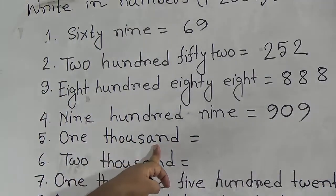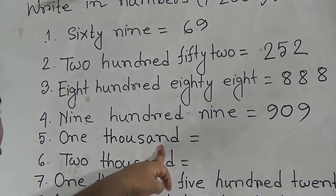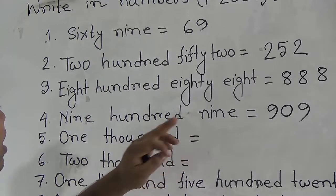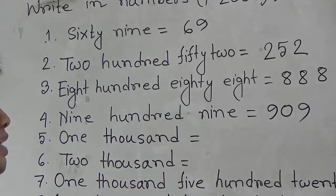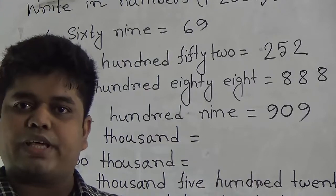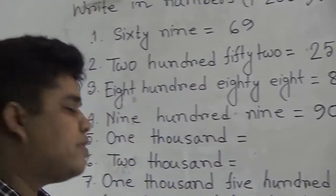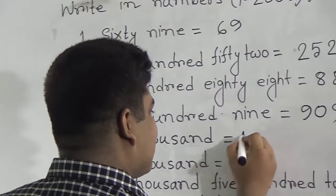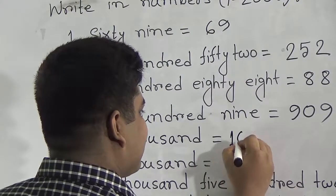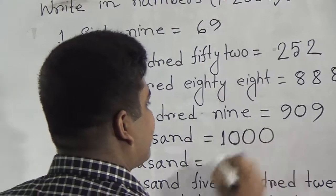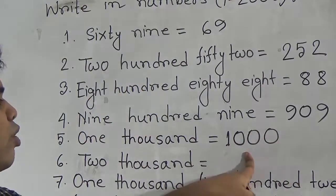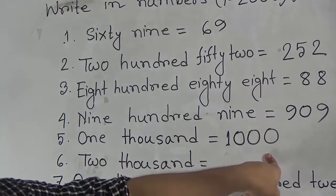For place value: hundreds place, tens place, and ones place. For 1000 — hundreds place is 0, tens place is 0, and ones place is 0, so we write 1,000. This is called one thousand.